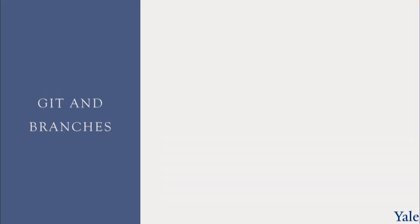So what do we mean by branches? This is one of the most important parts of Git. Let's say you have the main branch — this is where the code is — and we're working along, with each box representing another version of the software, a day later, a week later, a month later, depending on your timeline. And now you need to make some dramatic change, some major feature revision, and you create a branch.